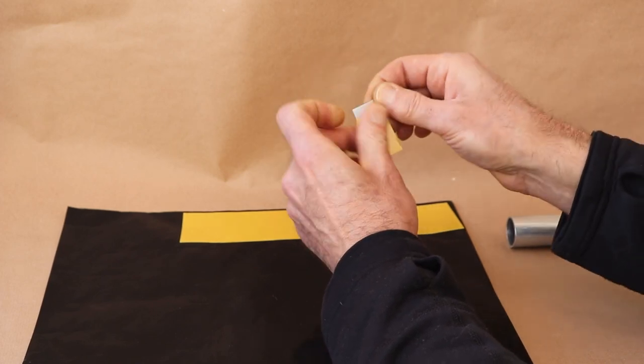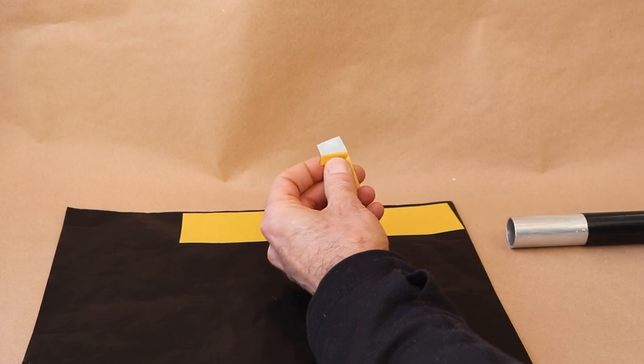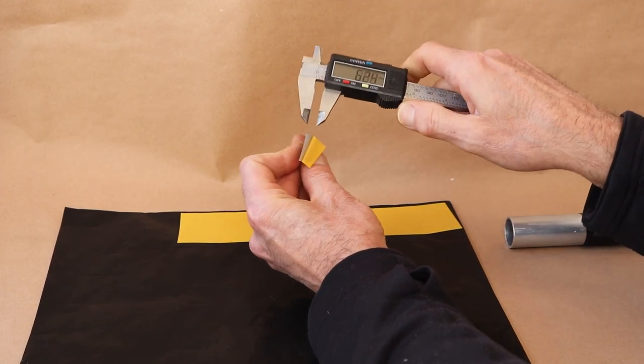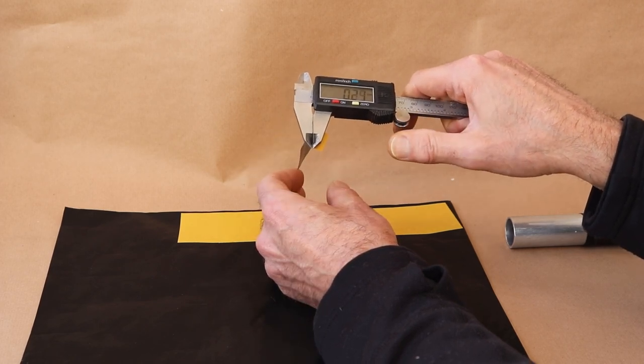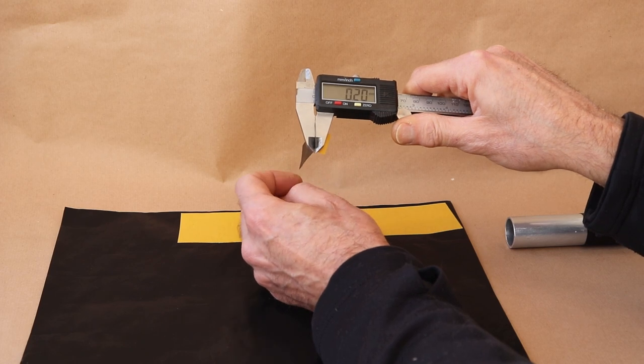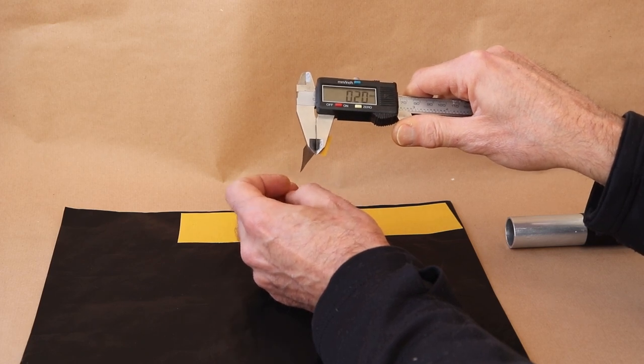There you go. What it will do is it will add a certain thickness to that rod. And it's around about 0.2 of a millimetre.